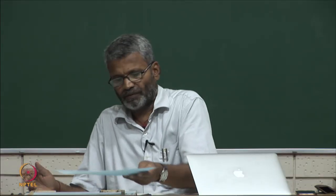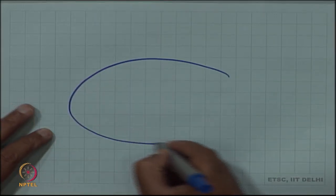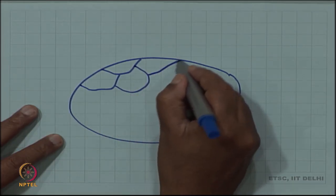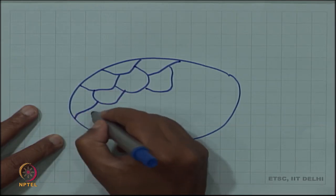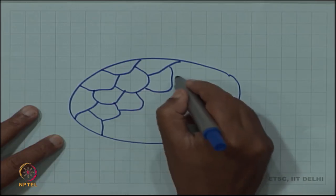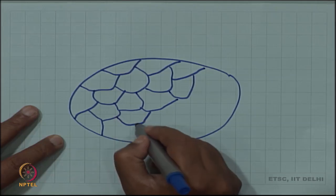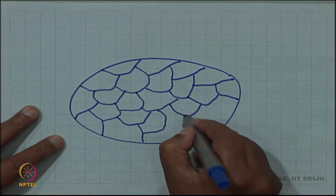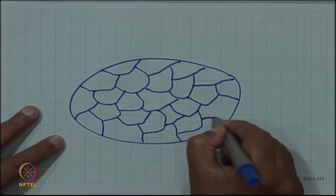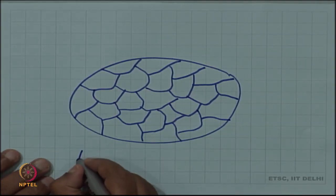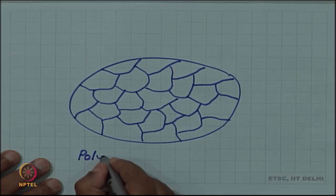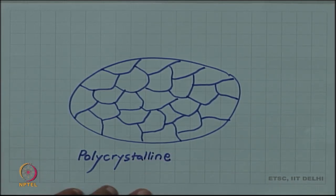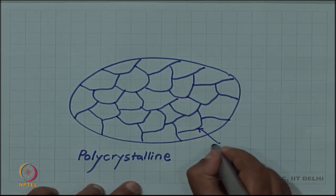Most samples of material which we use are actually polycrystalline, so they will have not just a single grain boundary and two grains, but a multitude of grains, with each pair of grains separated by a boundary. This crystal now has many grains, and each of these lines which I have drawn is a grain boundary. Such a sample will be called polycrystalline, and each of these internal boundaries is a grain boundary.